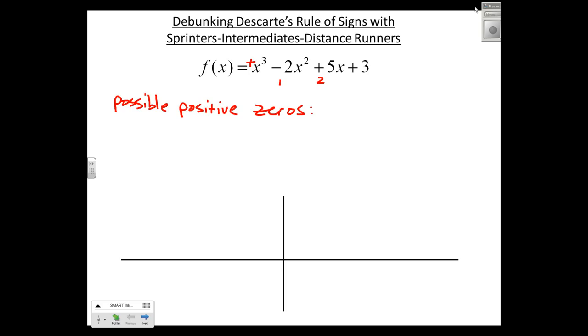And it says the number of possible positive zeros is either that number or that number minus any even number. So if I had seven of these, there would be seven or five or three or one positive zeros. In this case, two or zero.